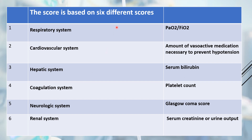The score is based on six different systems. You evaluate the respiratory system, cardiovascular, hepatic, coagulation, neurologic, and renal. In each system, you evaluate one important variable. In the respiratory system, you evaluate the PaO2 by FiO2 ratio.